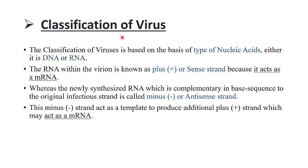Let's see the classification of viruses. Classification is based on the type of nucleic acid — it could be DNA or RNA. The RNA within the virion is known as the plus or sense strand because it acts as mRNA. The newly synthesized RNA, which is complementary in base sequences to the original infectious strand, is called the minus or antisense strand. The minus strand acts as a template to produce additional plus strands which may act as mRNA.